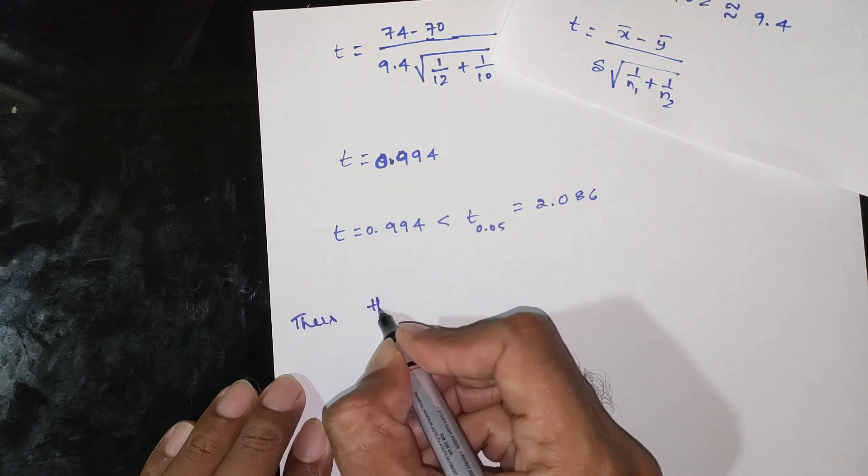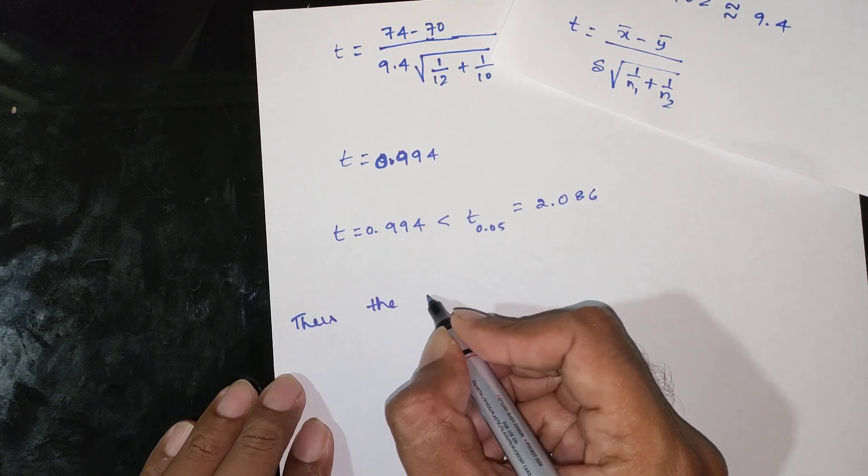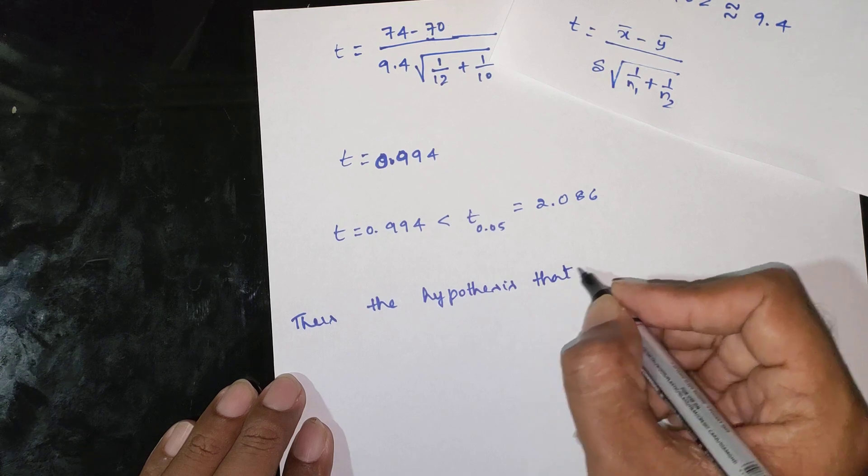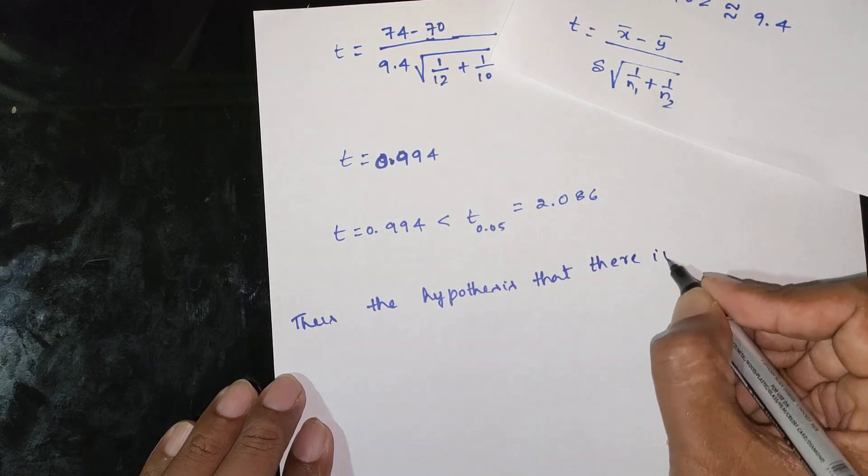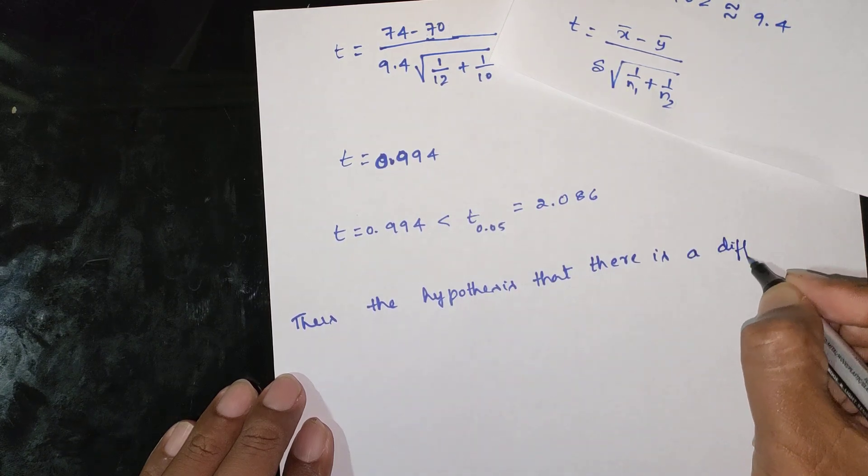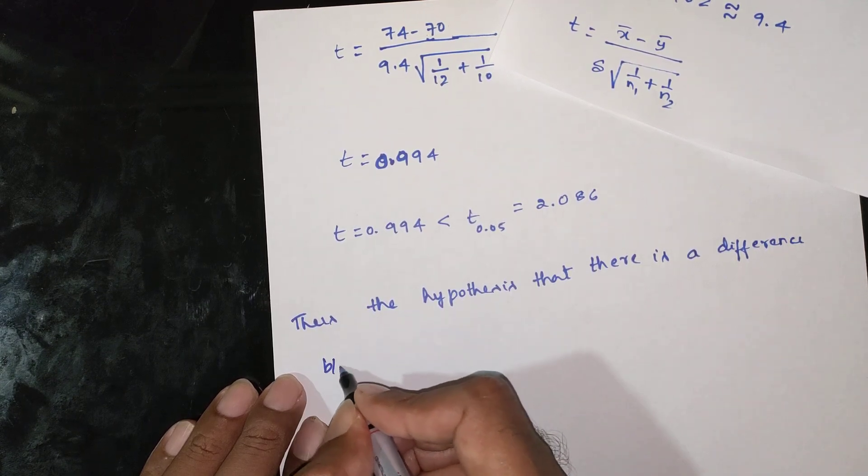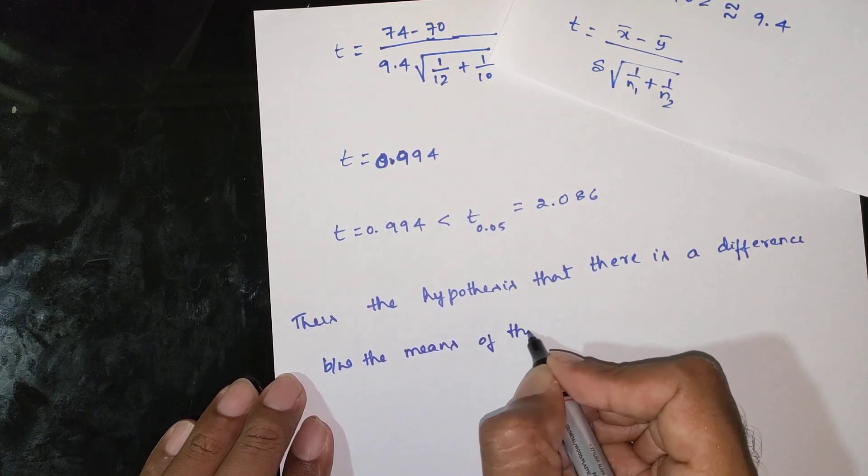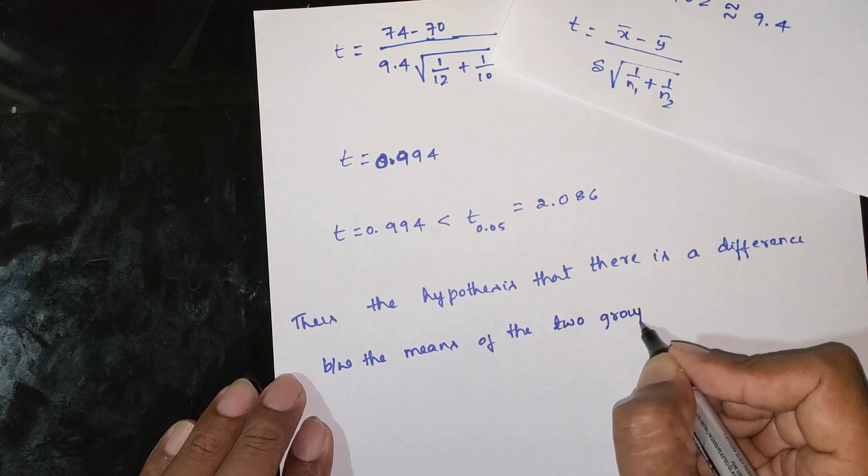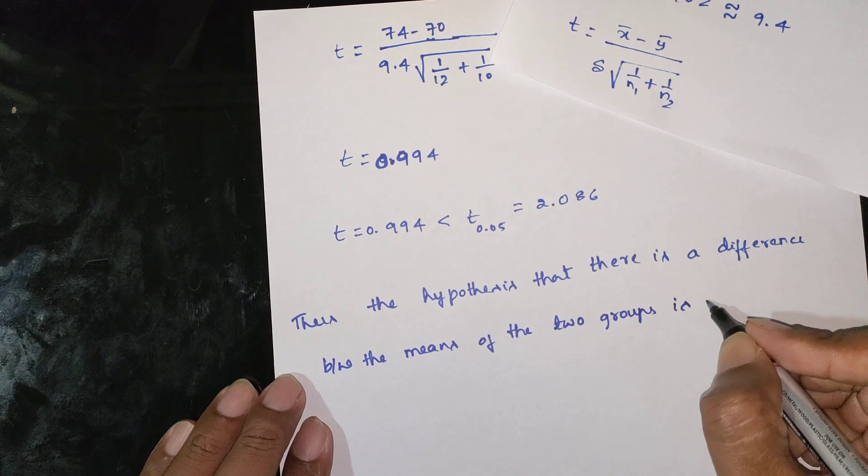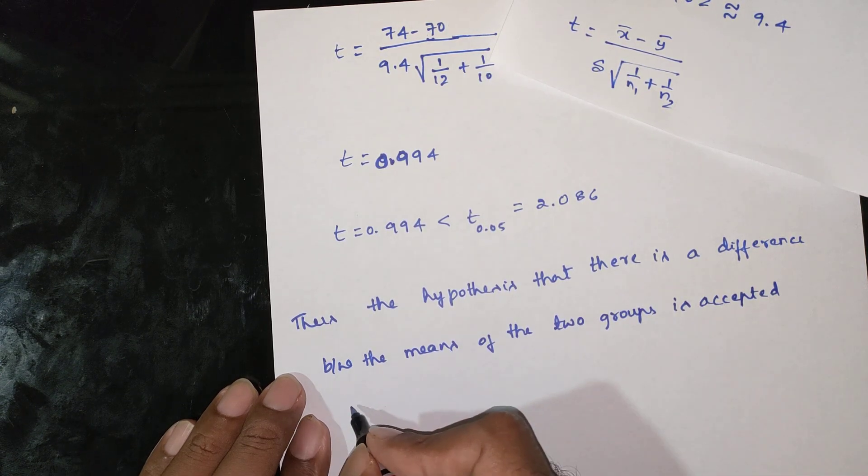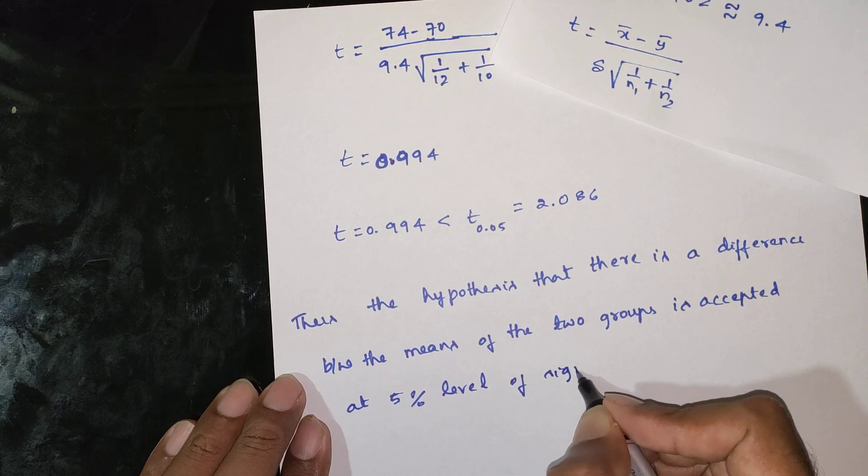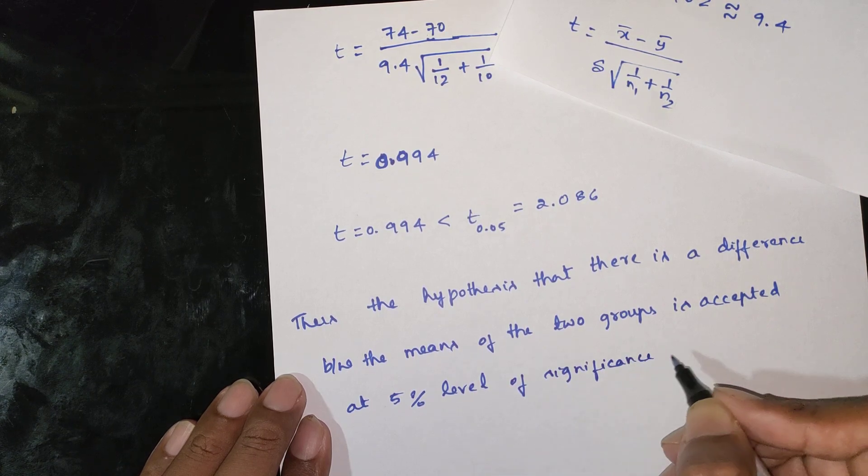Thus, the hypothesis that there is a difference between the means of the two groups is accepted at 5% level of significance.